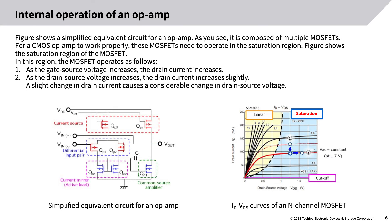Internal operation of an op amp: The figure shows a simplified equivalent circuit for an op amp. It is composed of multiple MOSFETs. For a CMOS op amp to work properly, these MOSFETs need to operate in the saturation region. The figure shows the saturation region of the MOSFET. In this region: 1) as the gate-source voltage increases, the drain current increases; 2) as the drain-source voltage increases, the drain current increases slightly. A slight change in drain current causes a considerable change in drain-source voltage.